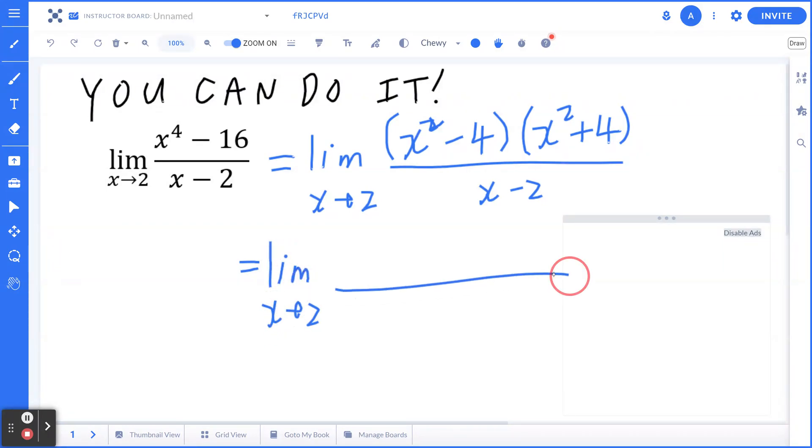You copy the limit as x is approaching 2. You can leave the denominator as is and recognize that x squared minus 4 will give you x minus 2, x plus 2, and can leave x squared plus 4 as is.